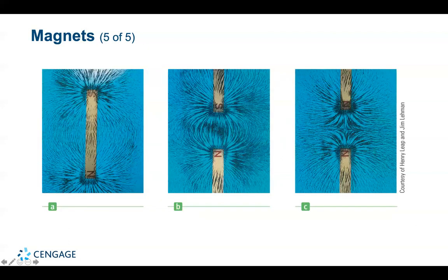In figure A, the magnetic field pattern of a bar magnet is displayed with iron filings on a sheet of paper. In B, the magnetic field patterns between unlike poles of two bar magnets are shown with iron filings. In C, the magnetic field patterns between two like poles are shown. The left figure is for a single bar magnet, the middle for two magnets with unlike poles, and the right for an interaction of like poles.